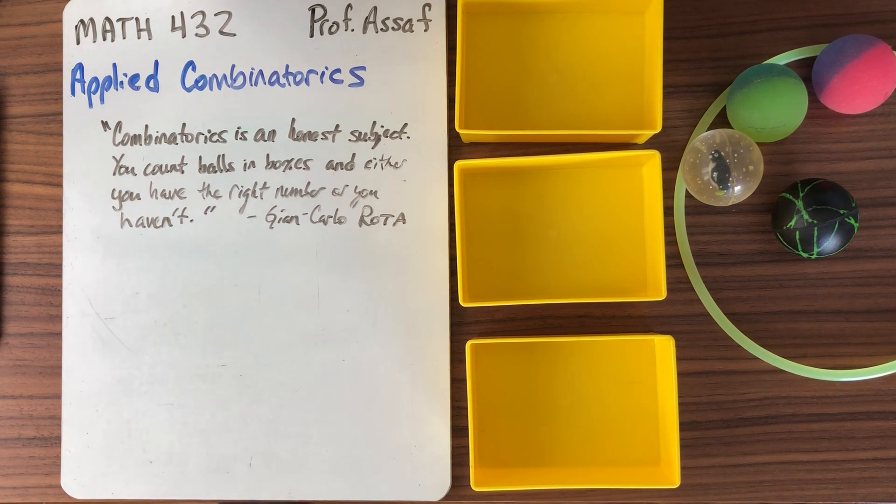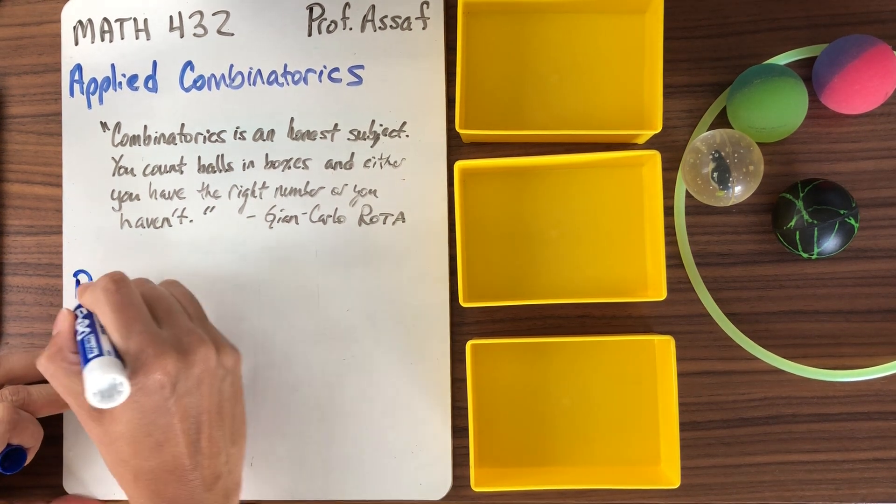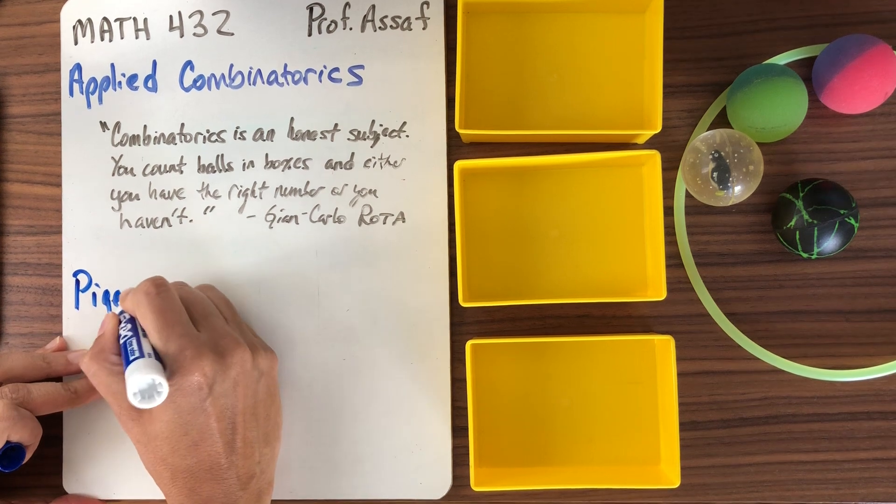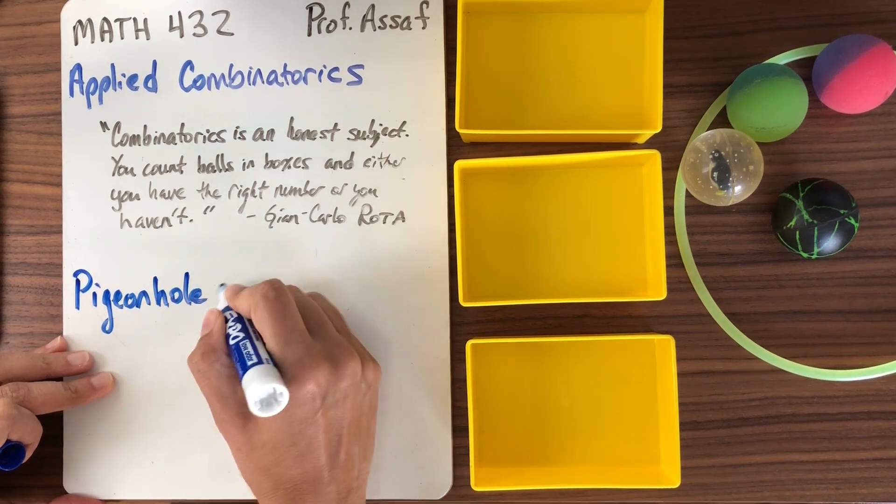So the first principle that we're going to learn in Combinatorics is one of the simplest and most powerful. This is something that I know that you've had experience with because everybody has experience with this, I think, at some point in life. This is called the Pigeonhole Principle.